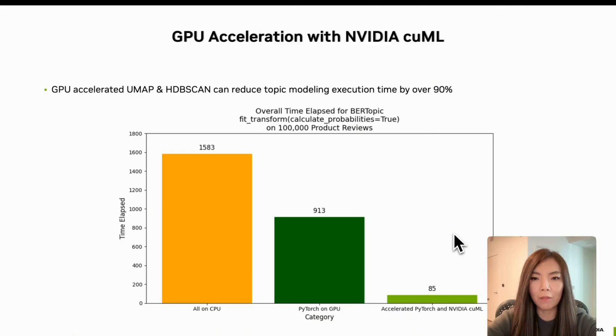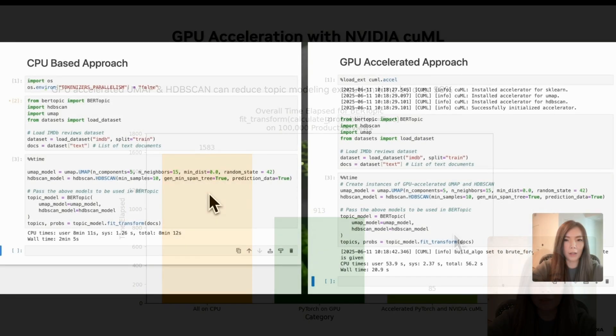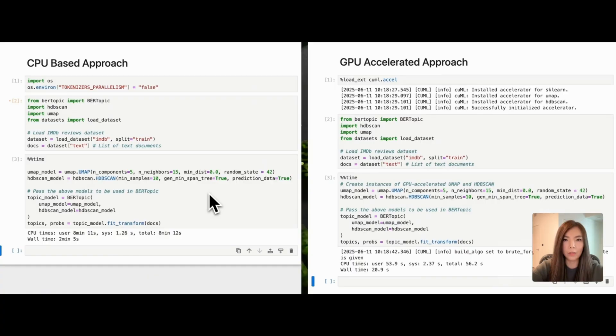We will see how to significantly reduce the execution time by using GPU-accelerated UMAP and HDBSCAN through an example. How easy or how hard it is to transition from CPU to GPU?